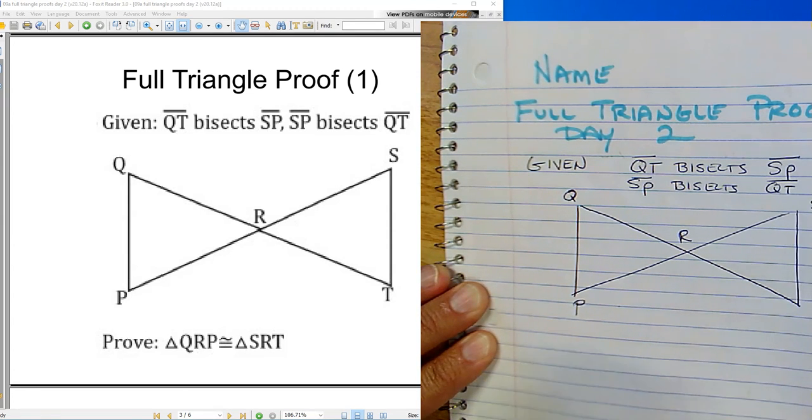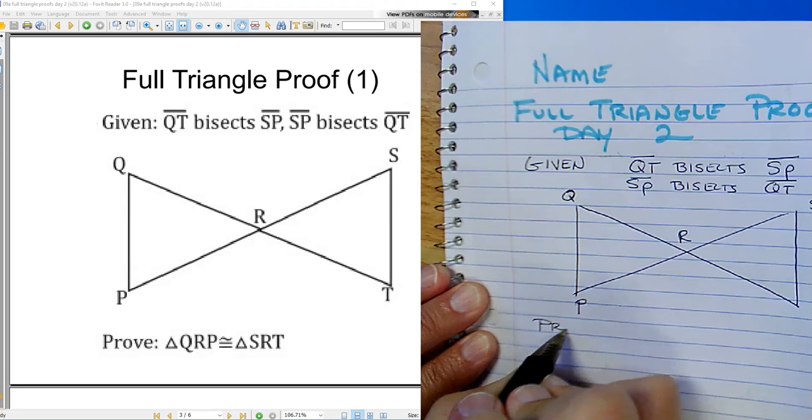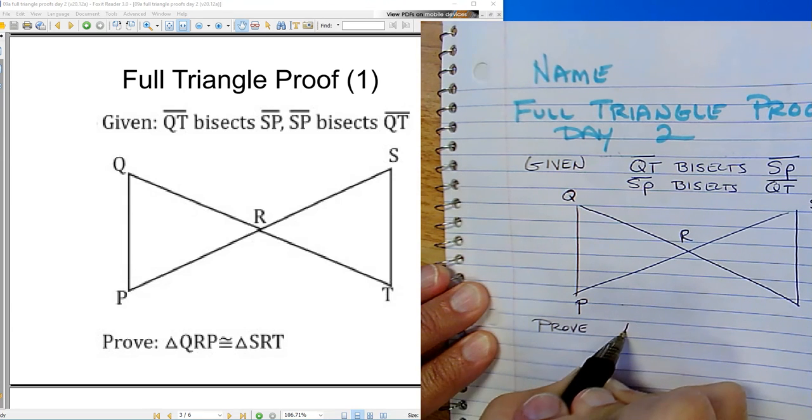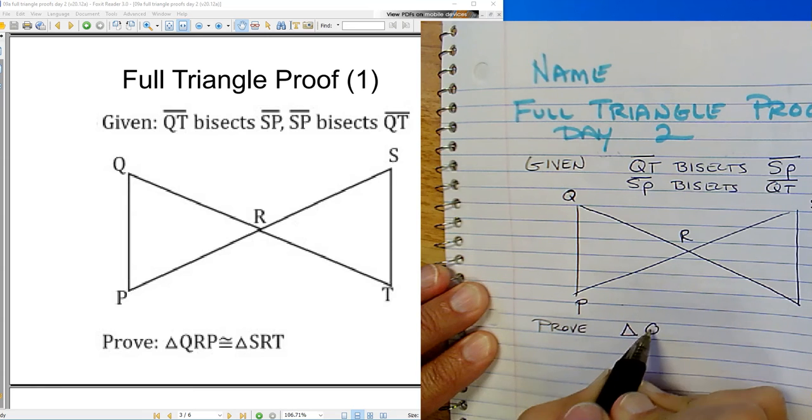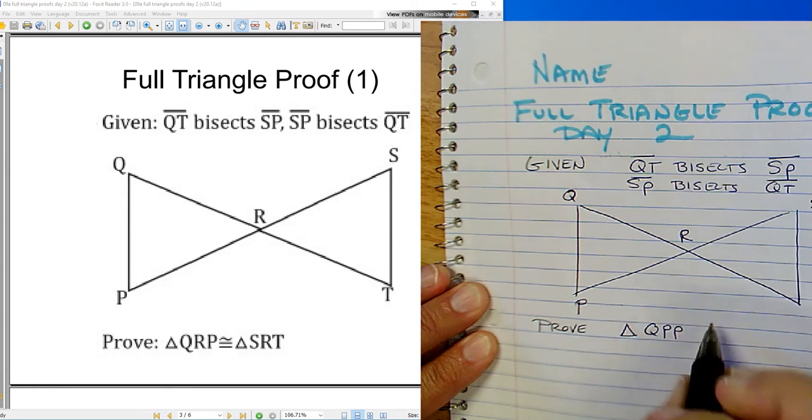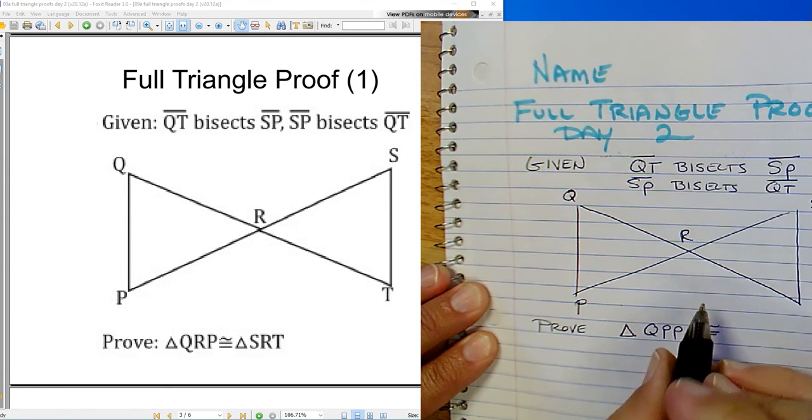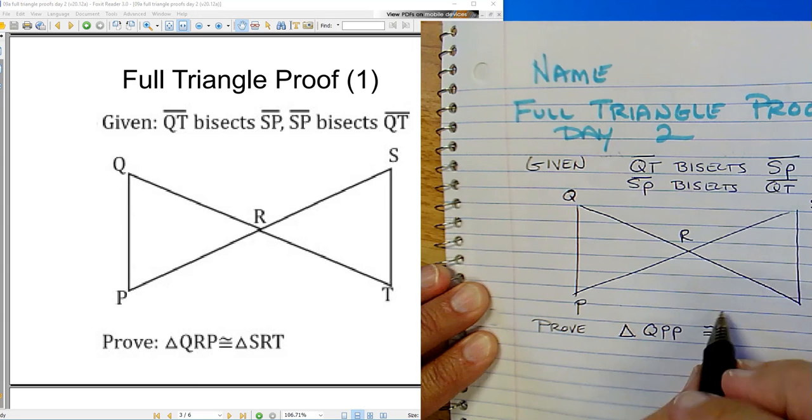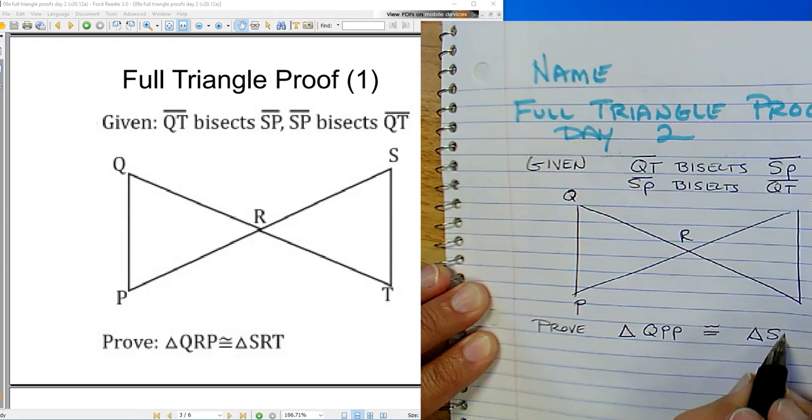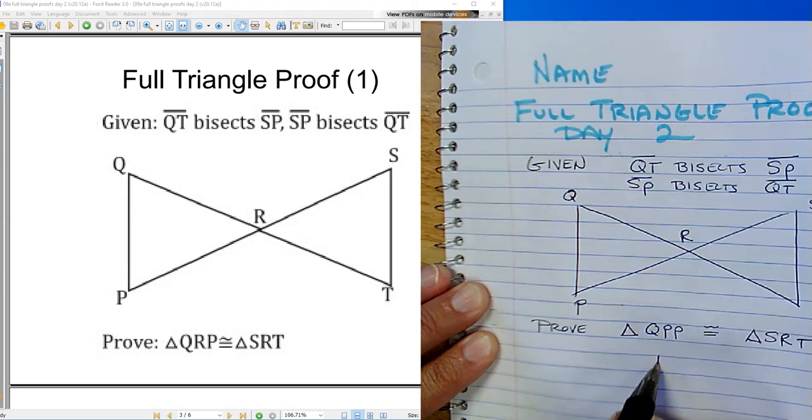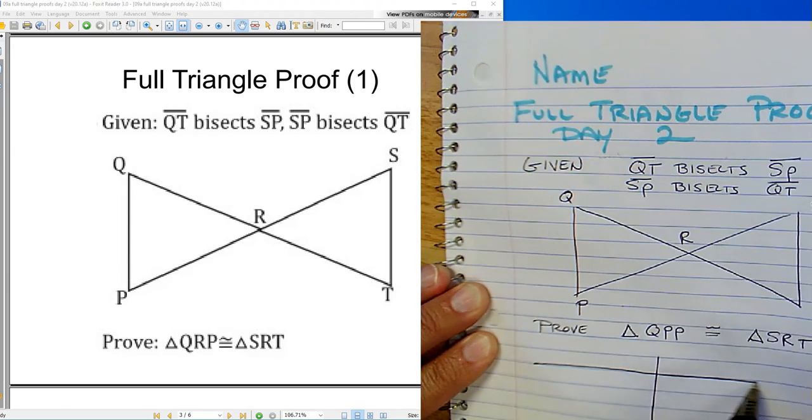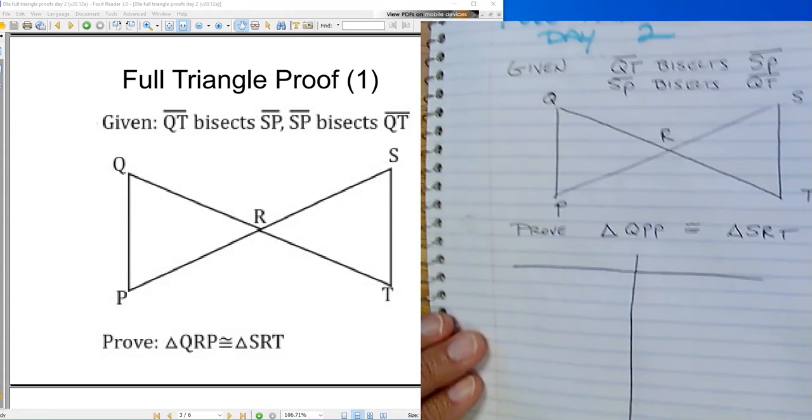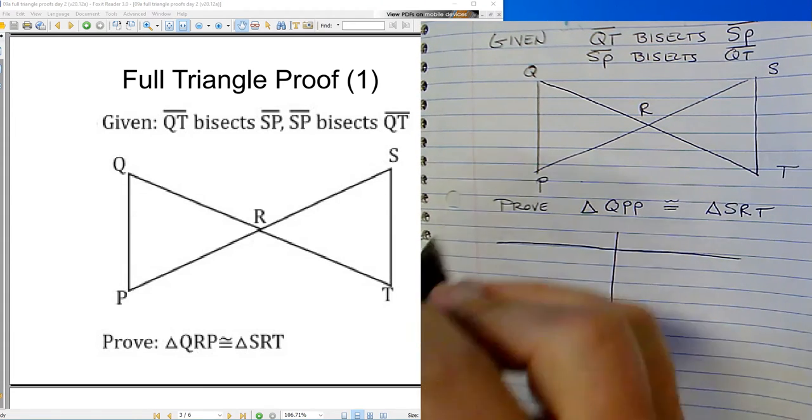And we're trying to prove the following: that triangle QRP is congruent to triangle SRT. Two-column proof. And we'll go with our statement and our reason.